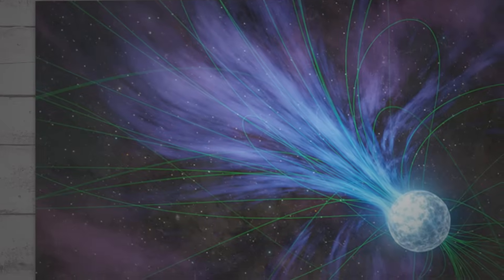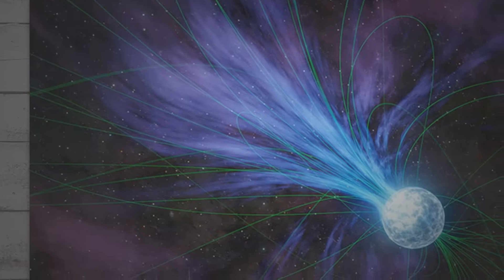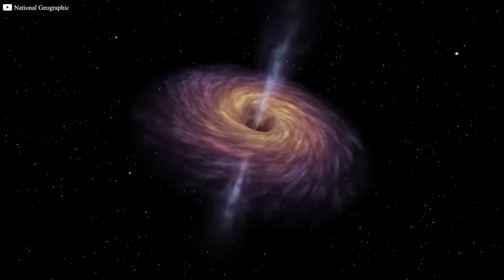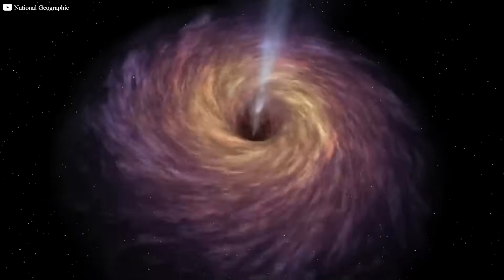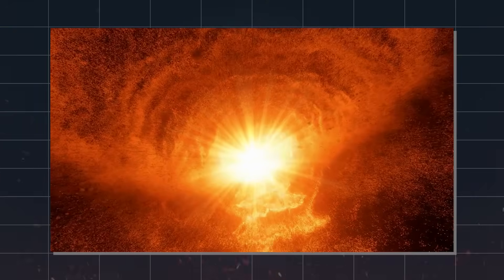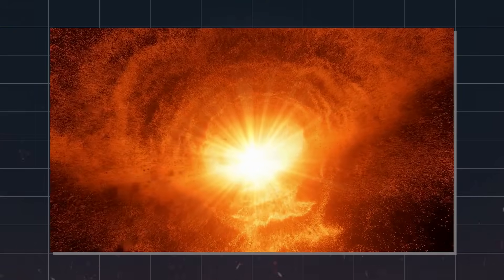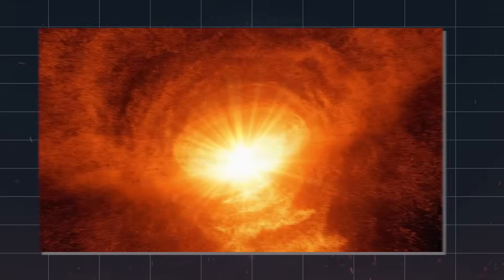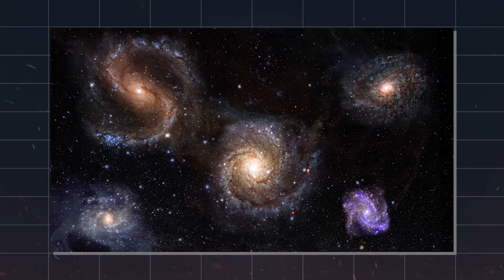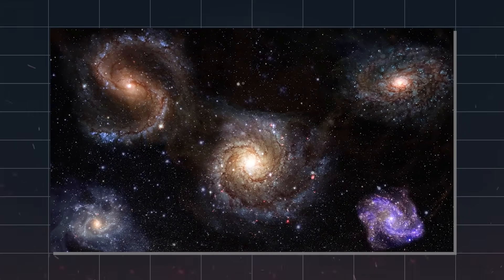Neutron stars are fascinating objects with a density so extreme that a teaspoon of material would weigh billions of tons. Black holes, on the other hand, are more mysterious and continue to challenge our understanding of physics. Studying the aftermath of a supernova can unlock secrets about these enigmatic objects. Regardless of the outcome, Antares explosion will scatter heavy elements throughout the cosmos, creating the building blocks for new stars, planets, and even life. It's a cosmic cycle of death and rebirth playing out across the universe.